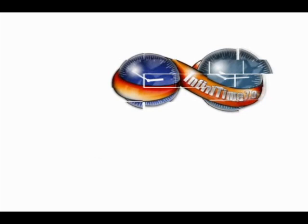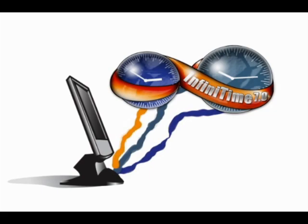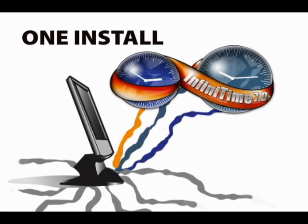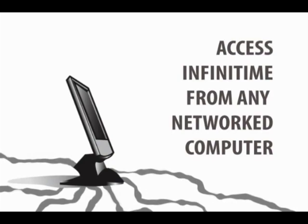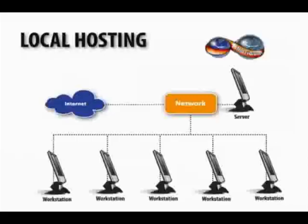Infinitime 7.0 is installed on only one computer and can be accessed by any computer on the network, giving you quick and easy use, free resources, and central control. While most business software is migrating to the web, we realize that many organizations have no desire or reason to use the Internet in combination with their labor management system. For this reason, we designed Infinitime 7.0 to be hosted locally on your company's server.